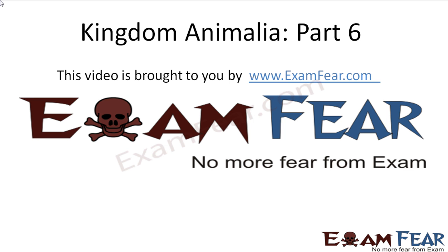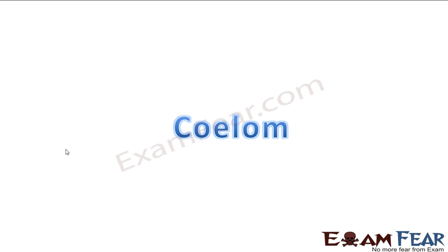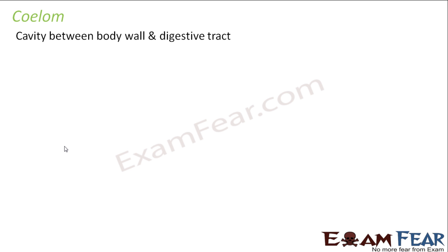This video on Kingdom Animalia part 6 is brought to you by examfear.com. The next parameter we will discuss is coelom. Coelom was a very important parameter in classifying organisms. So let us first try to understand what is a coelom.